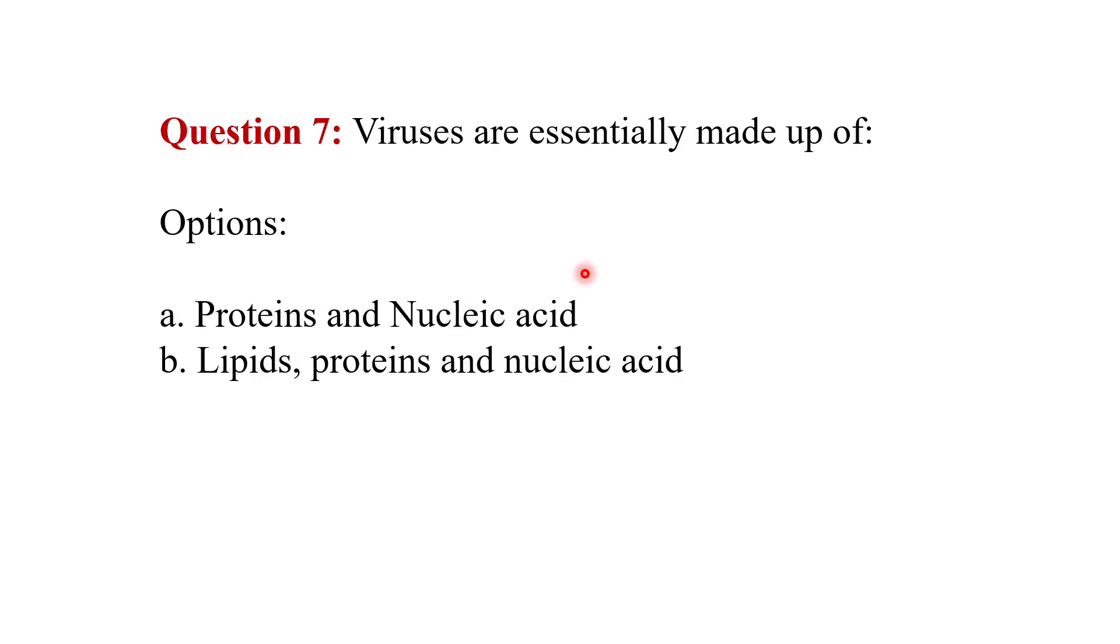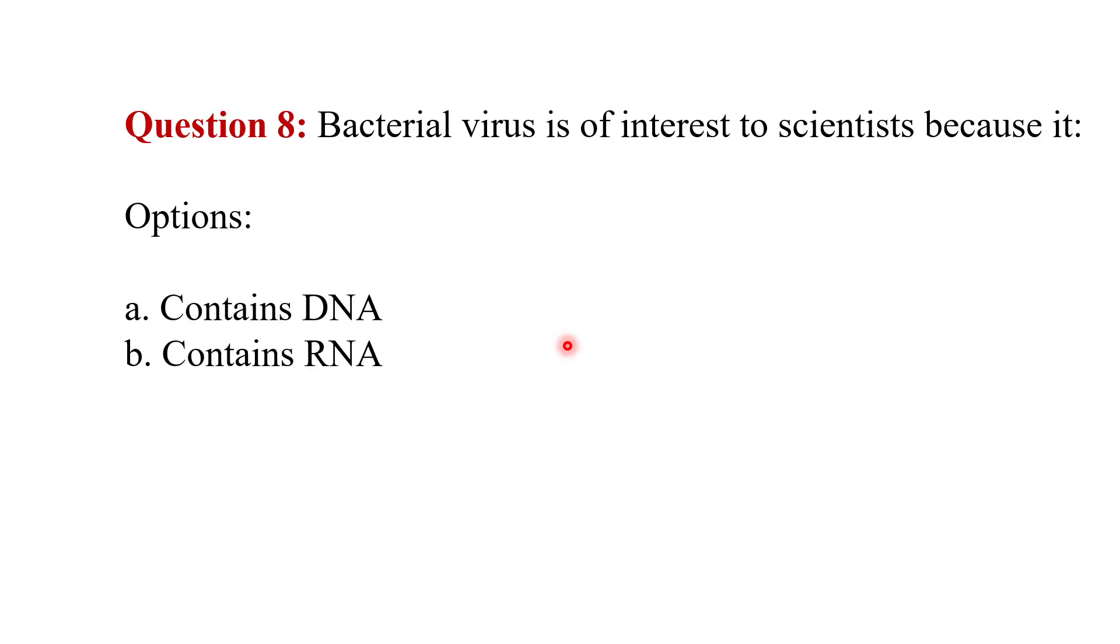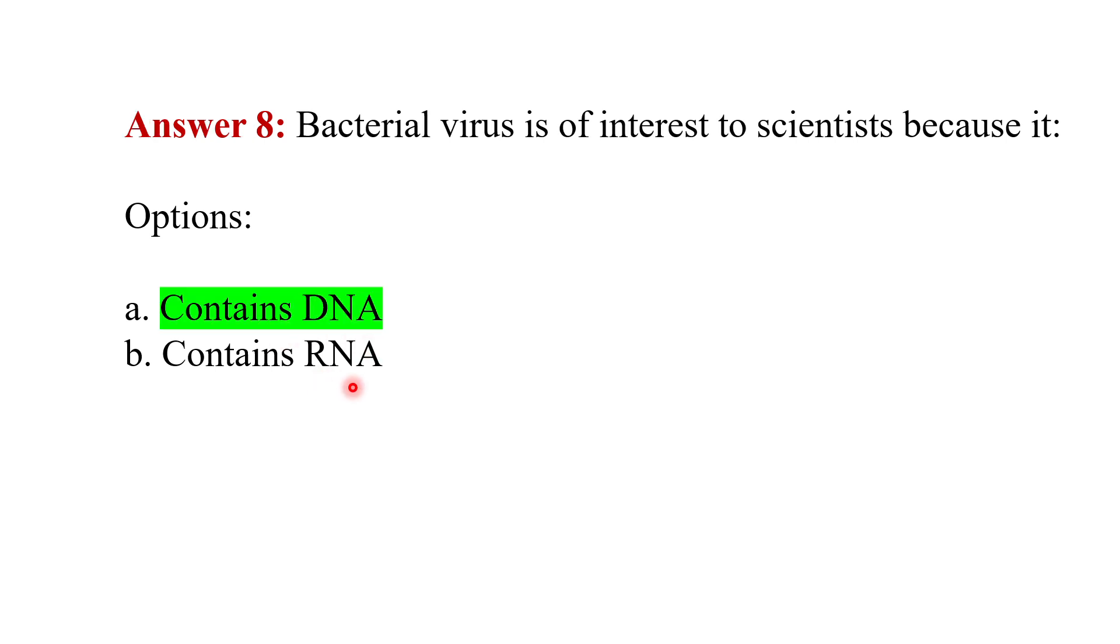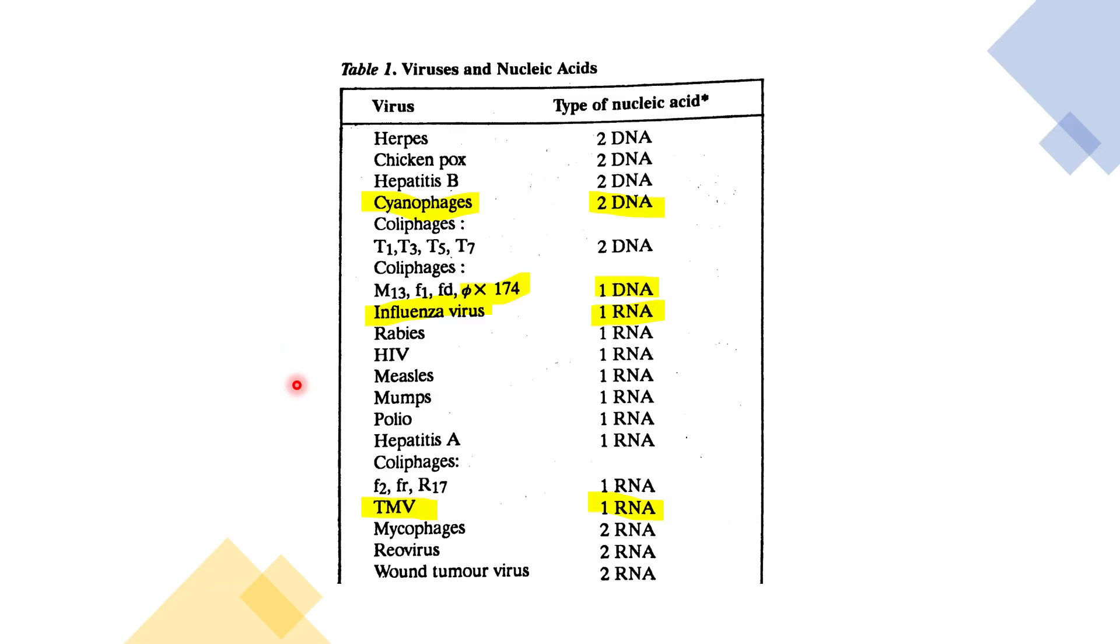Viruses are essentially made up of what? The answer is proteins and nucleic acid. Bacterial virus is of interest to scientists because it contains DNA. Nucleic acid found in HIV is what? It is single-stranded RNA, double-stranded RNA, or double-stranded DNA? The answer is nucleic acid found in HIV is single-stranded RNA.